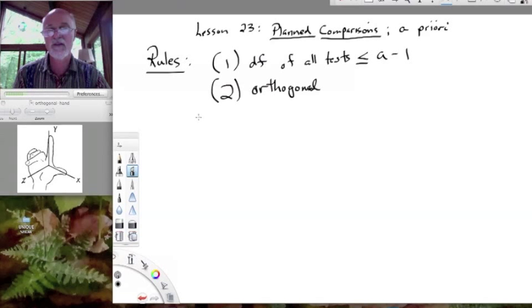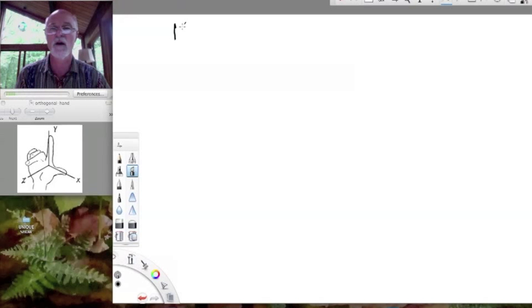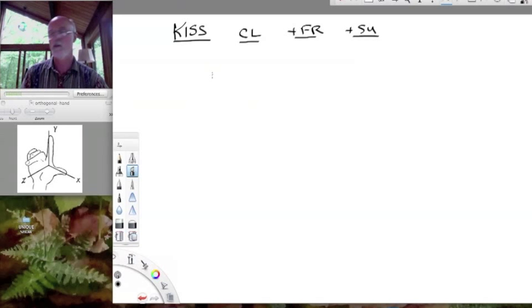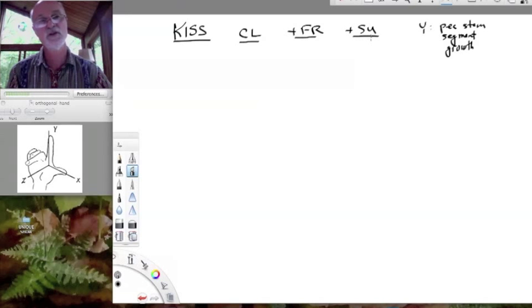In the same sense, the different contrasts you'll make between groups won't depend upon each other. They won't be correlated, I suppose. Let's illustrate what we mean by this. So let's use a keep-it-simple-stupid data set. I'm going to put this up at the top so we can work with this for a while. Our keep-it-simple-stupid data set, we have a control group, we have a group that we've added fructose to in the medium, say a growth medium, and then we've added sucrose to another growth medium. And we've measured some Y variable on these, for example, P-stem segment growth.